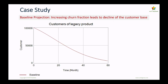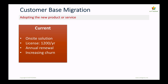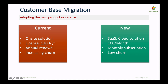What we're interested in now: in a scenario like this, we have a company with 10,000 customers and a projected loss of the installed base — over the course of 60 months, or five years, they will lose the entire legacy product base. The question is, what could they do? In this case, there's an enterprise on-site solution where customers pay $1,200 per year with an annual renewal process, and the new solution is a cloud-based SaaS where customers pay $100 per month on a monthly subscription. The goal is to move customers from current to new.